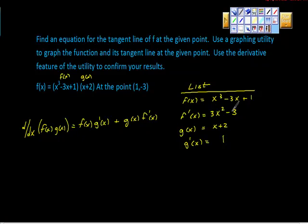I'm going to start plugging in these pieces. So f of x is this mess over here, so it's going to be x cubed minus 3x plus 1. That's the f of x. G prime at x is equal to 1. This plus sign here is this plus sign right here. g of x is x plus 2 times f prime at x. f prime at x is given by 3x squared minus 3.